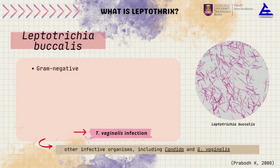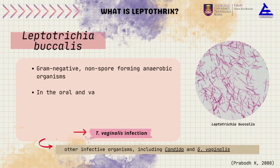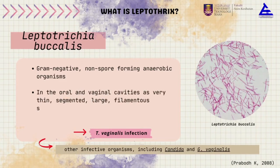From another journal (2008), Leptothrix is from Leptothricia buccalis, which is a gram-negative bacteria, non-spore forming, and lives as an anaerobic organism. It occurs as a very thin, large filamentous structure in oral and vaginal cavities.